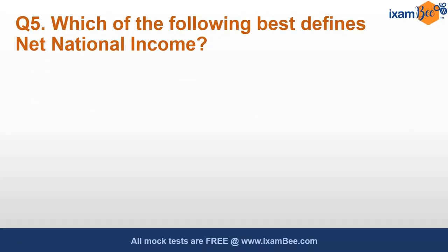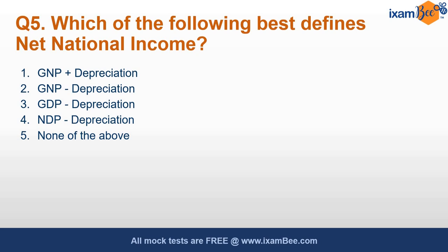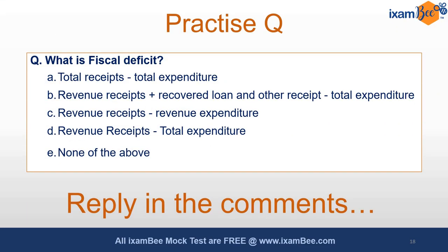Which of the following best defines net national income — GNP plus depreciation, GNP minus depreciation, GDP minus depreciation, NDP minus depreciation, or none of the above? The correct answer is GNP minus depreciation, as we also saw in the earlier flowchart — the difference between net and gross is only of depreciation. I want to leave you with a practice question: What is fiscal deficit? The options are — total receipts minus total expenditure; revenue receipts plus recovered loans and other receipts minus total expenditure; revenue receipts minus revenue expenditure; revenue receipts minus total expenditure; or none of the above. Please reply in the comment section.